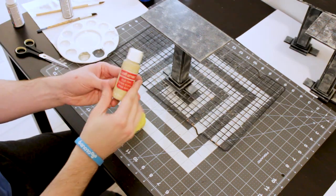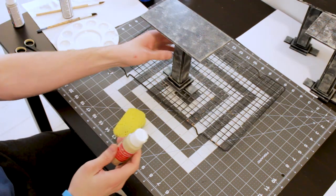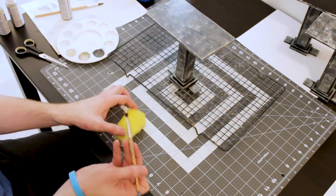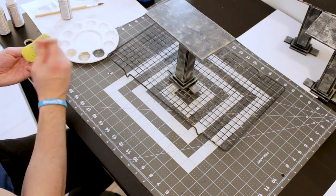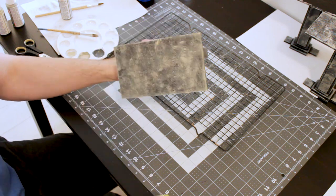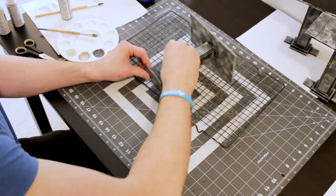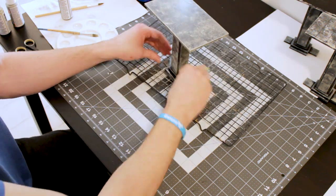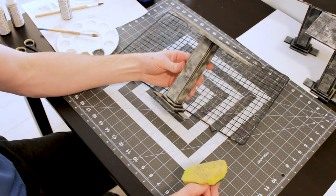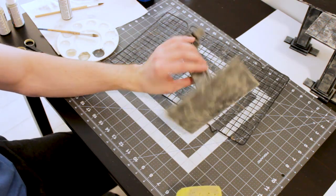So once that's dry, we're going to come back one last time with a suede and I'm going to use even less paint and press even softer this time. Just getting the highlights basically. This gives it a really organic look so it's not just a blue-gray on your table.